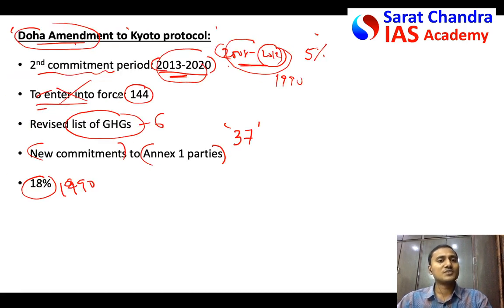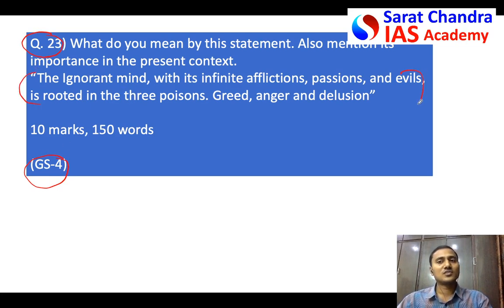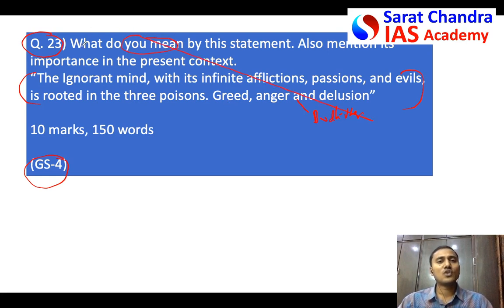As I mentioned, for each sub-question just write two to three points without explaining too much — dump as many relevant facts as you know concisely. The question for tomorrow is Question 23 from General Studies Paper 4 (Ethics). In ethics, they often give a quotation without mentioning who said it — you don't need to know the author, but if you do (for example, Bodhidharma), you can mention it. The question asks what the statement means and its importance in the present context — write in two parts, 10 marks, 150 words.